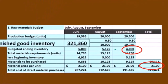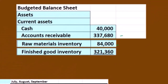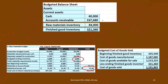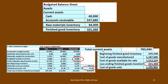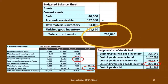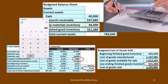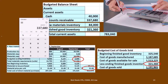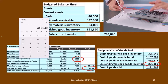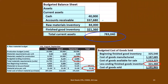Then we have finished goods inventory, taken from the cost of goods sold calculation. In real life, we'd estimate the ending finished goods inventory. Adding up all total current assets: $40,000 cash plus $337,680 accounts receivable plus $84,000 raw materials plus $321,360 finished goods gives us total current assets of $783,040.